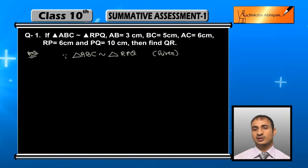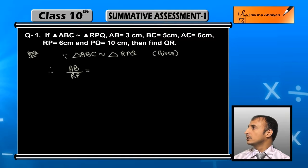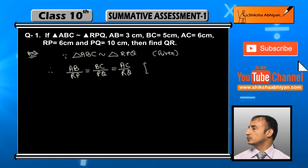Similar triangles की side क्या होती है, proportion में होती है। तो मैं लिख सकता हूं since AB upon RP, AB की corresponding side RP, BC की corresponding side PQ, and AC की corresponding side RQ.